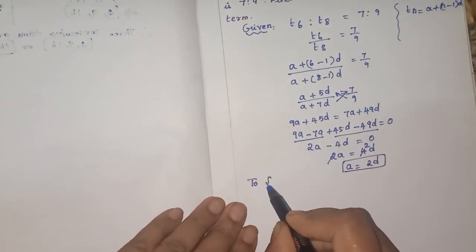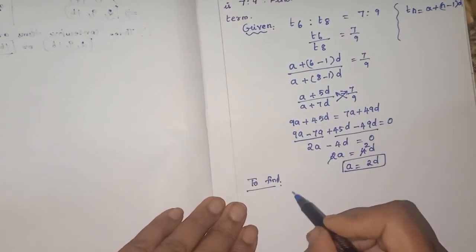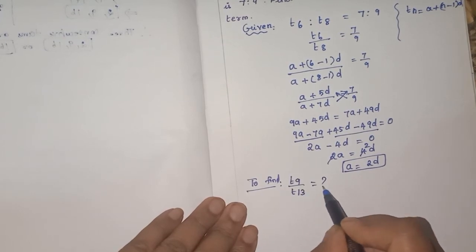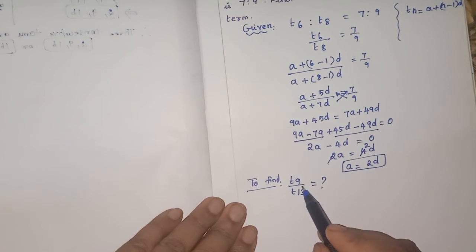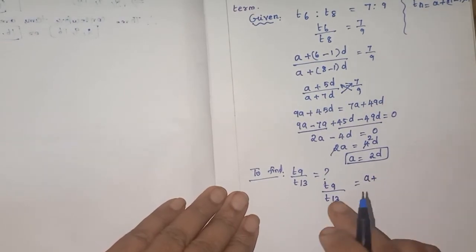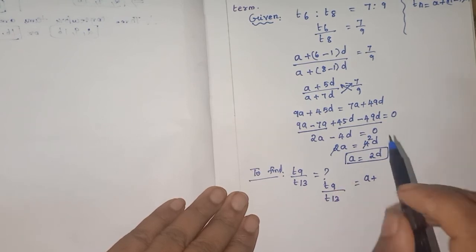So what is asked to find? To find the ratio T9 by T13 is asked. So how will you write T9 by T13? T9 means A plus 1 less than this. Easily you can write, you can save time. And N minus 1 is what? We wrote like this, T6 now, or 1 less than 5D.